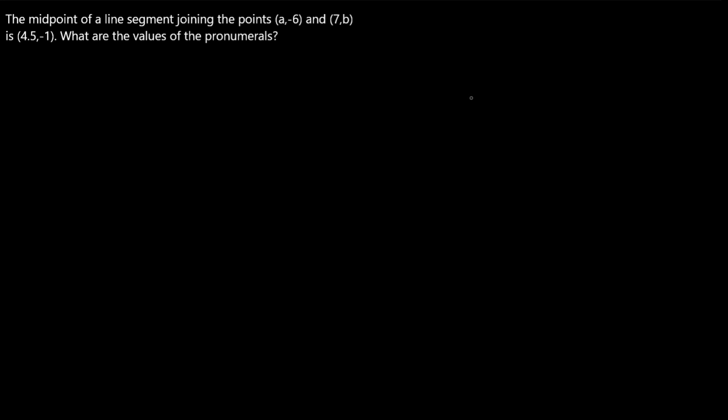Hello and welcome back. This time we've got another question — it's about midpoints and linear algebra. So let's read this one. The midpoint of a line segment joining the points (a, -6) and (7, b) is (4.5, -1). What are the values of the pronumerals?